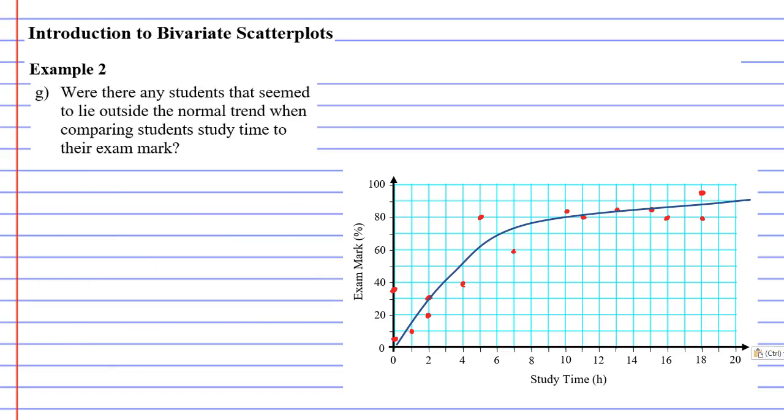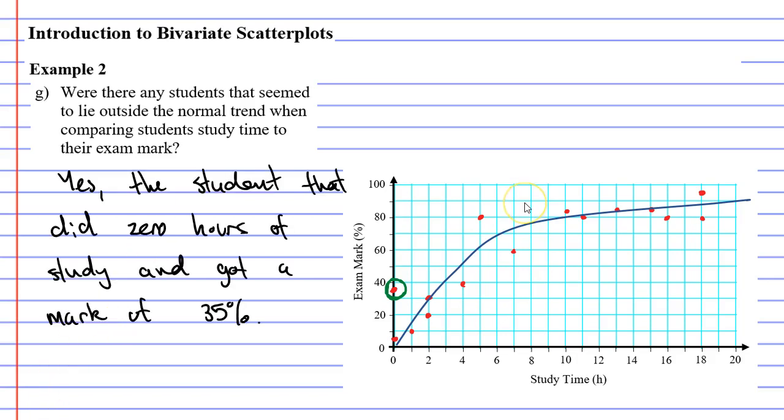Moving on to our last question, question G: Were there any students that seemed to lie outside the normal trend when comparing students' study time to their exam mark? I would definitely say that this student seems to lie outside the trend. So we'll say yes, the student that did zero hours of study and got a mark of 35%. You might also regard these students as lying outside the trend as well.